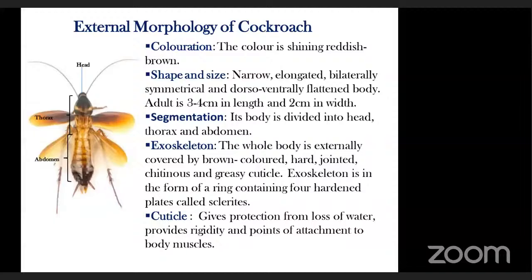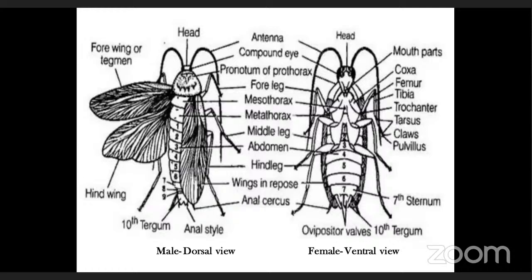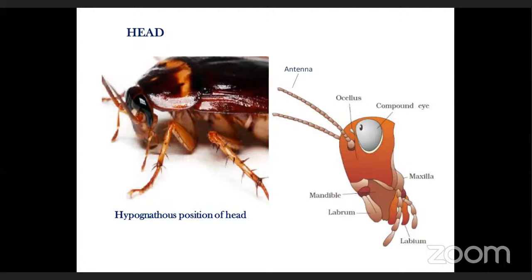The cockroach has three main parts: head, thorax, and abdomen. The head is in hypognathous position — it is perpendicular to the long axis of the body, so the mouth faces downward. Hypognathous means hypo (lower) and gnatha (jaws), indicating that the head is in a lower position relative to the body axis.